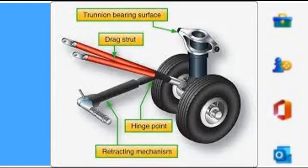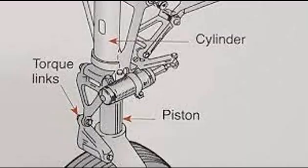Nose Landing Gear. The torque links are attached at the base of the outer cylinder and just above the axle on the inner cylinder. The torque links are hinged in the middle and at their attaching points. This allows the inner and outer cylinder to telescope. Torque links also keep the inner cylinder from rotating or spinning.